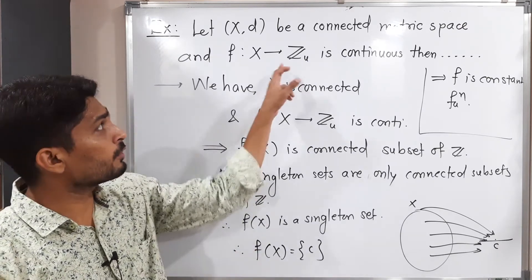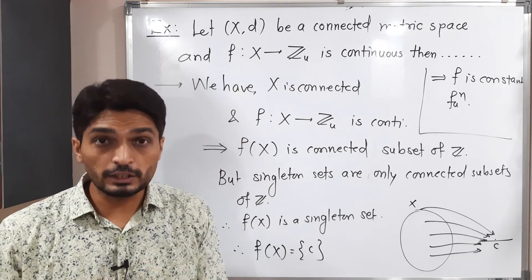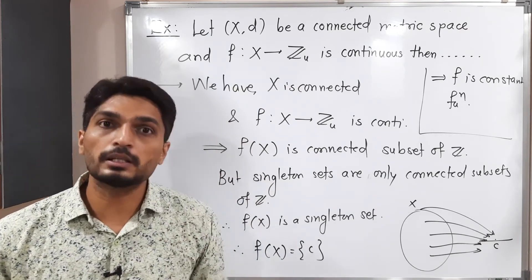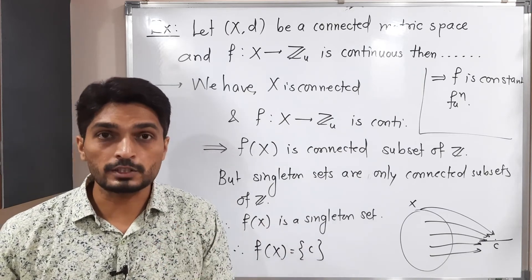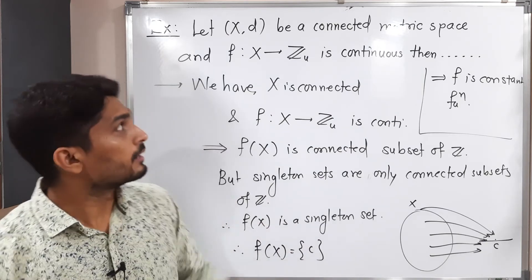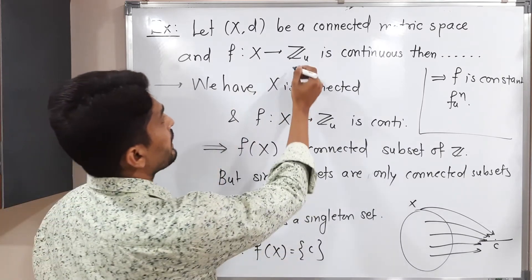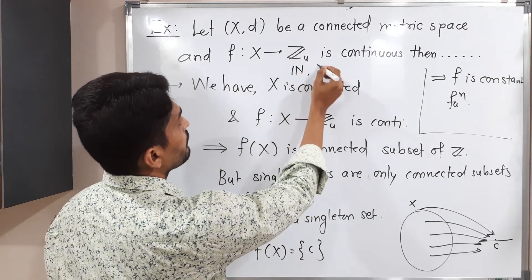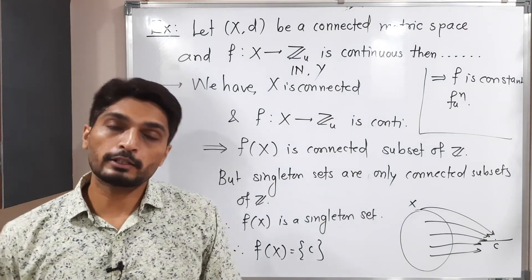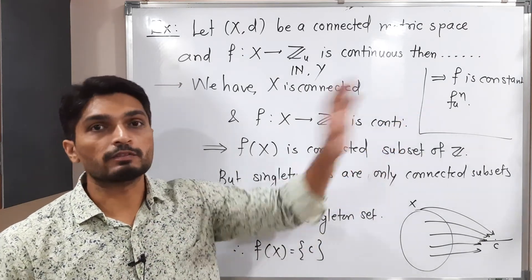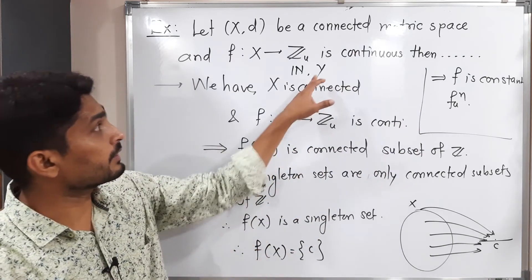But instead of Z, instead of set of integers, if you have set of natural numbers, then also same logic we can apply and we will have that function f is a constant function. If you replace Z by N, then also it will be true or if you replace N by Y, it is a discrete metric. Then also same logic is applicable and again you will have f is a constant function.